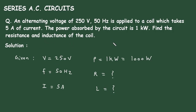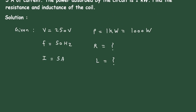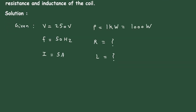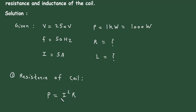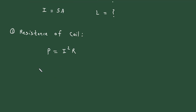Now first of all we have to find the resistance of the coil. To find resistance of the coil, we will use this formula: power is equal to I squared R. Because we have the value of power and we also have the value of current I, so from this formula we can find the value of resistance R.